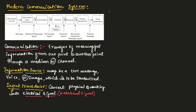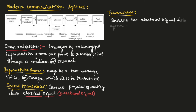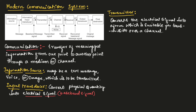Next, let us see the transmitter. The transmitter converts the electrical signal into a form which is suitable for transmission over a channel. The output of the input transducer is an electrical signal, and the transmitter converts it into a transmitted signal — that is, the signal transmitted by the transmitter is known as the transmitted signal.